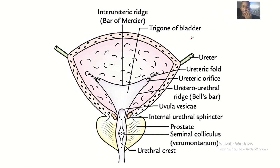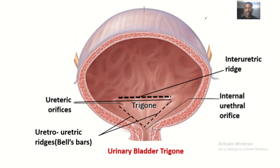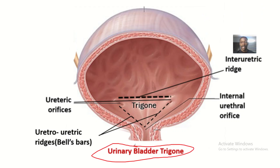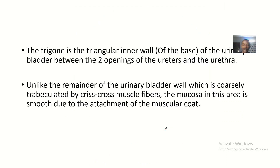Good morning guys. Today we'll be talking about the trigone of the bladder — a very important area in the bladder called the urinary trigone. The word 'trigone' means triangle, so the trigone is just like a triangle. It has three parts, and we'll be talking about them and giving names to them.